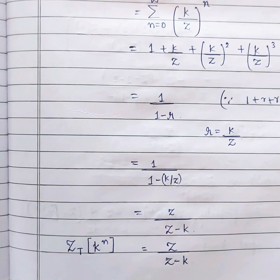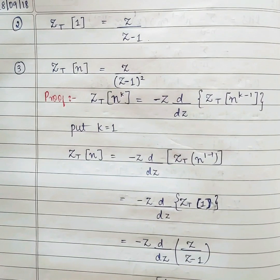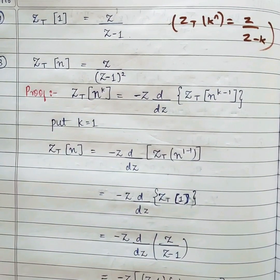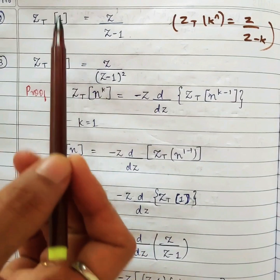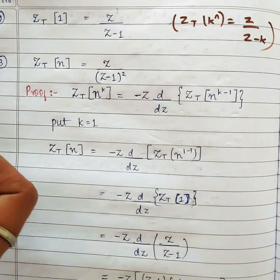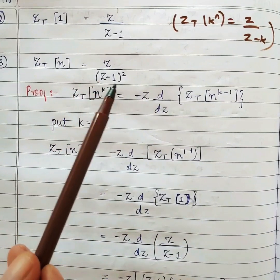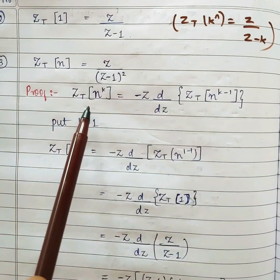Add that to your formula page. Now, Z{1}: since Z{k^n} = z/(z−k), just substitute k = 1. Since 1^n = 1, Z{1} = z/(z−1). We got this formula from the first one. Now let's see Z{n}. The answer is z/(z−1)², and to prove it, we use the property Z{n^k} = −z d/dz of Z{n^(k−1)}, substituting k = 1.